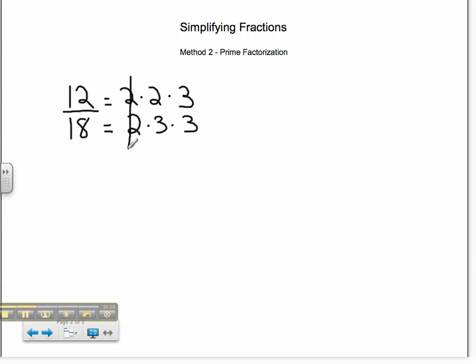So both of them have a 2. Both of them have a 3. So what I'm left over with is 2 over 3. So my final reduced fraction is 2/3.